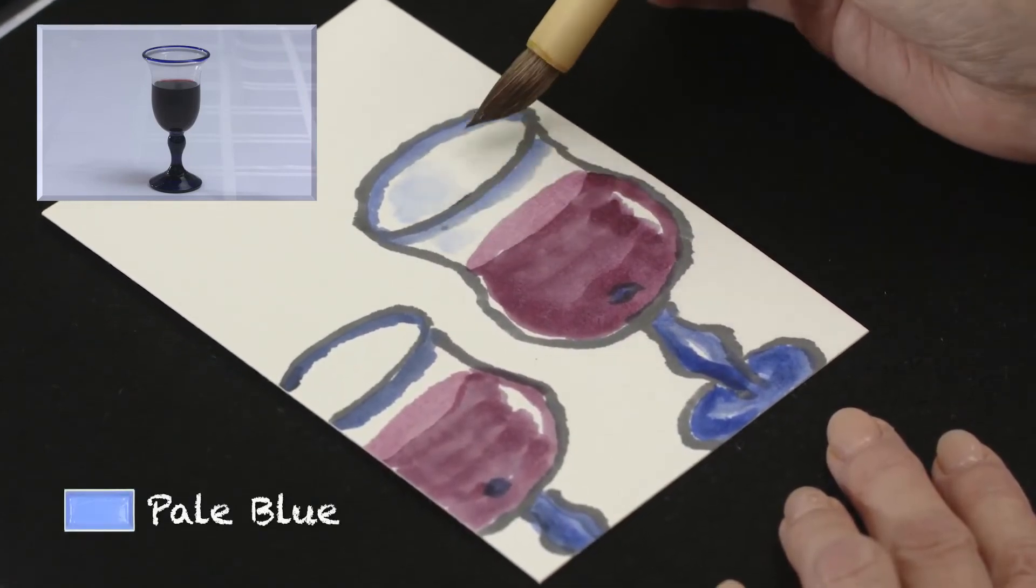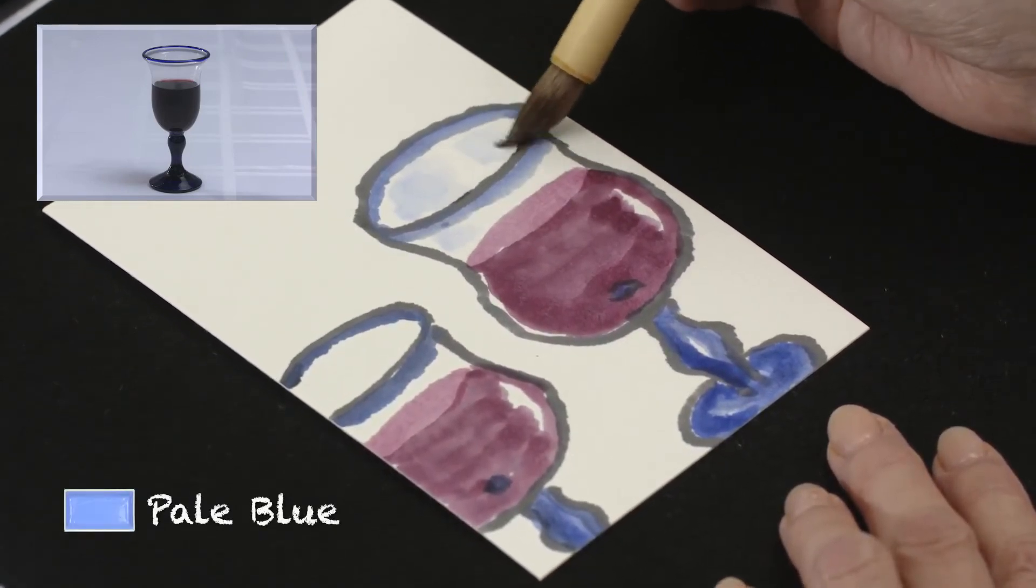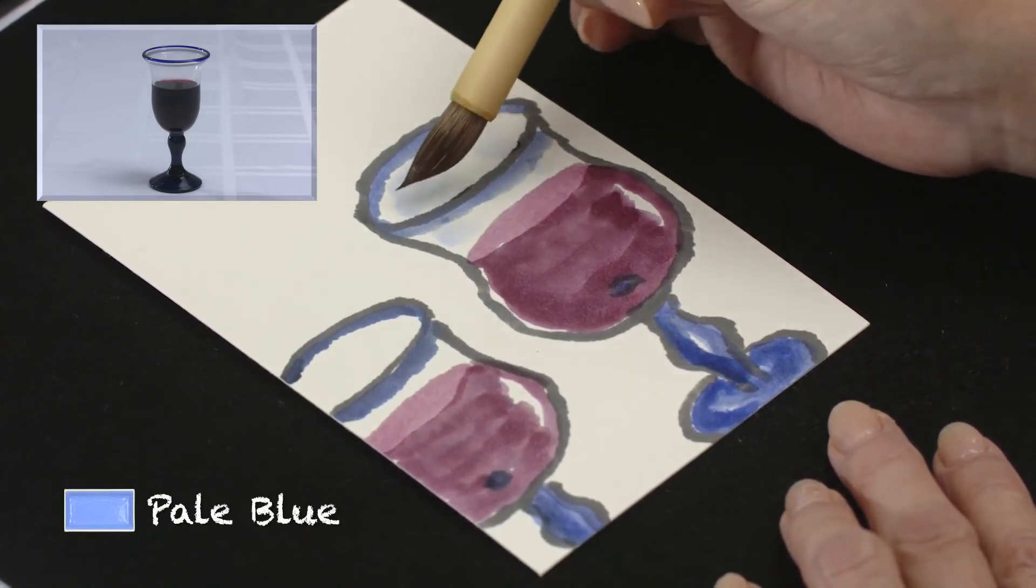Using a very wet gradient brush, add pale blue to the glass for a glass-like look.